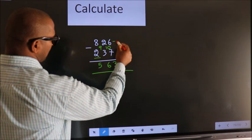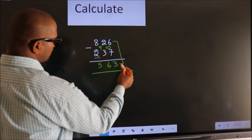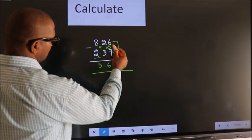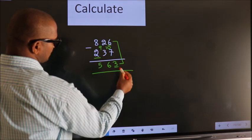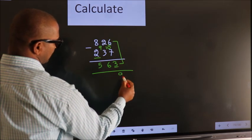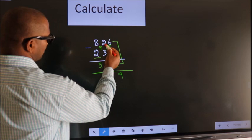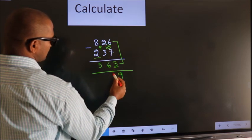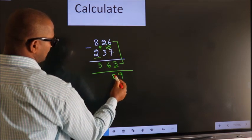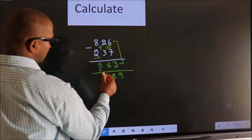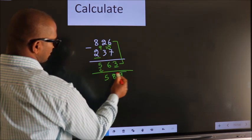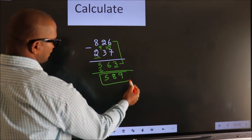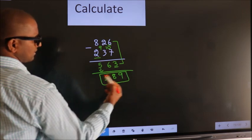Now add these two. 6 plus 3 is 9. 2 plus 6 is 8. The first digit as it is, you write. So this is our answer.